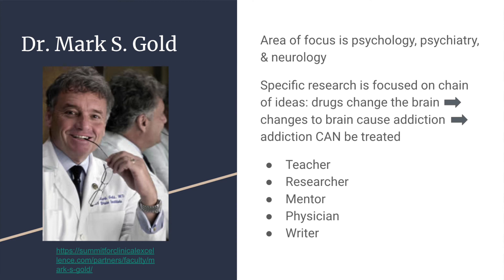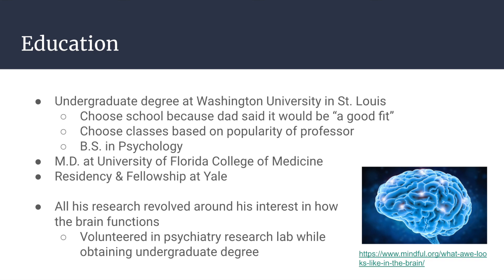He attended Washington University in St. Louis for his undergraduate degree. He chose this school because his dad had visited the school for a work-related event and told his son that he thought it would be a good fit for him. Dr. Gold believed his dad, and this was the only school he applied to. He chose his classes in undergrad based upon the professor's popularity and character, ended up taking the psychology path, and obtained a degree in that major. He then went on to medical school at the Florida College of Medicine and did his residency and fellowship at Yale, specializing in psychiatry.